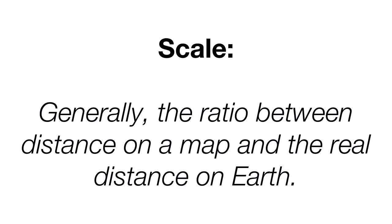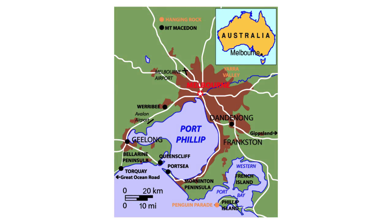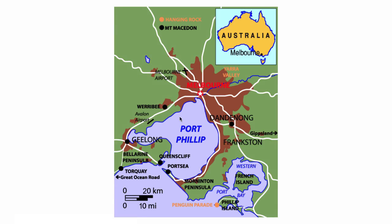Scale generally refers to the ratio between the distance on a map and what's on earth — the relationship between what is on the map and what's on the landscape. Cartographers love to use scale. They'll show you a small-scale map of all of Australia with Melbourne pointed out, and right next to it a large-scale map with Melbourne in the center showing the airport, the capital city, and what each distance on the map means on earth.